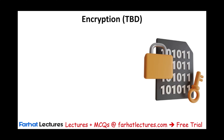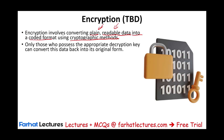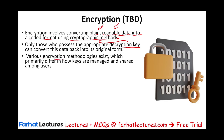Starting with encryption — we'll have a separate recording on it, but here we go over it as a form of obfuscation. Encryption involves converting plain, readable data into a coded format using a cryptographic method — a technique that takes the language and makes it look like something else while keeping the meaning, assuming you know which cryptographic method was used. Only those who possess the appropriate decryption key can convert the data back into its original form. There are various encryption methodologies that primarily differ in how keys are managed and shared among users.